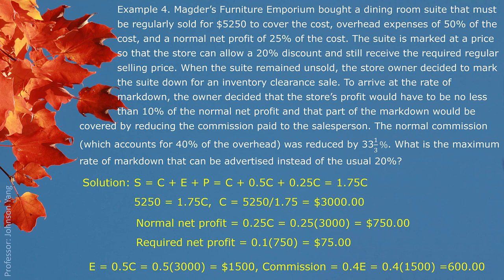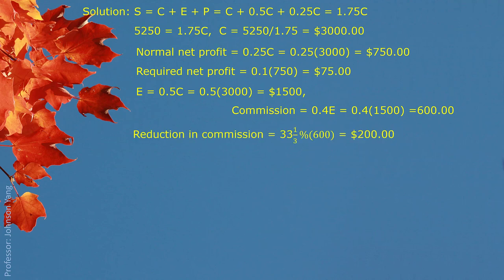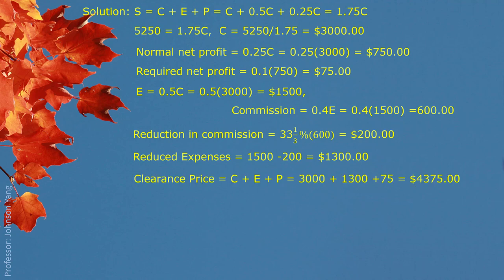For the clearance sale, commission is reduced by one-third: $600 × (1/3) = $200 reduction, leaving $400. Reduction in commission = $200. Reduced expenses = $1,500 - $200 = $1,300. Clearance price = cost + new expenses + new profit = $3,000 + $1,300 + $75 = $4,375. The original marked price = regular selling price divided by 0.8 = $5,250 / 0.8 = $6,562.50. Markdown = $6,562.50 - $4,375 = $2,187.50.